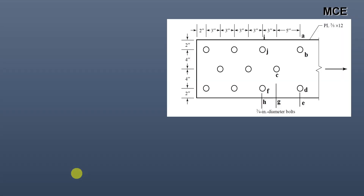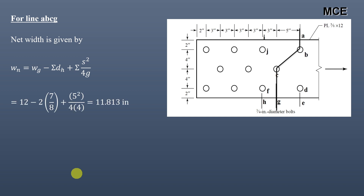Next we consider failure line A-B-C-G. This is also a staggered failure line, so the net width is given by the staggered formula. It passes through two bolt holes, S = 5 inch, and G = 4 inch. Putting in these values gives a net width of 11.813 inch.